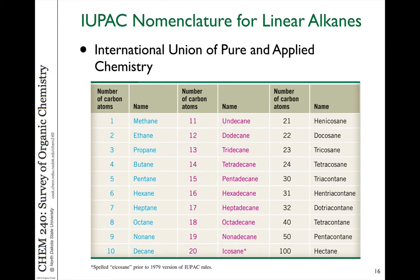Longer chains have more systematic names. So if you go to 11 carbons it's undecane, 12 carbons is dodecane, and so on. Those larger numbers of carbon chains we tend to not have to deal with that often, so I don't think you need to worry too much about trying to remember those names. But certainly you should know the names of the first ten linear alkanes.